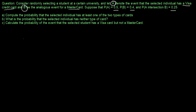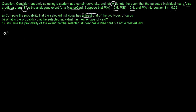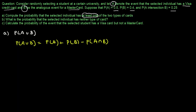In part A, we have to compute the probability that the selected individual has at least one of the two types of cards — that means we have to calculate the probability of A union B. We can directly use the formula: probability of A union B equals probability of A plus probability of B minus probability of A intersection B.